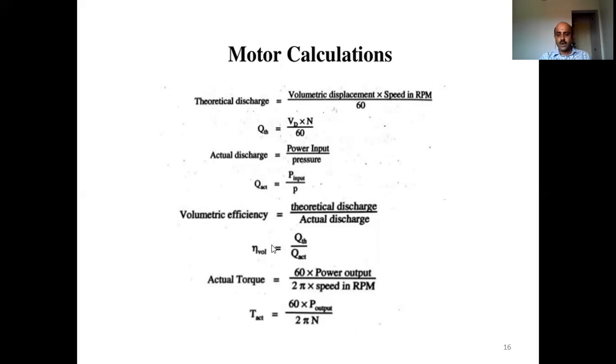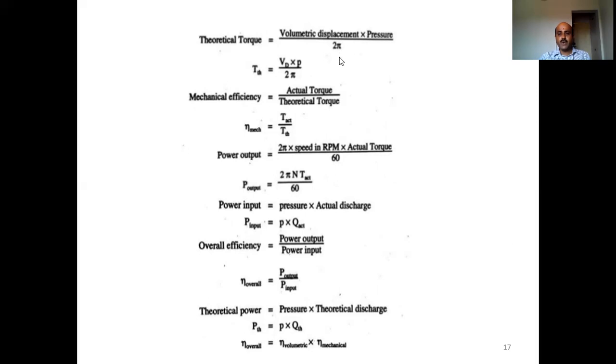Volumetric efficiency is the most important parameter for hydraulic motors. Actual torque is calculated as power output divided by 2π into speed N. Theoretical torque is volumetric displacement into pressure divided by 2π, giving theoretical torque in Newton-meters.